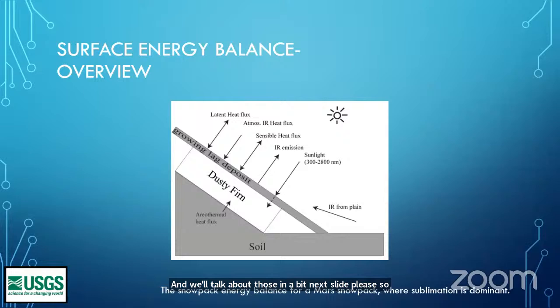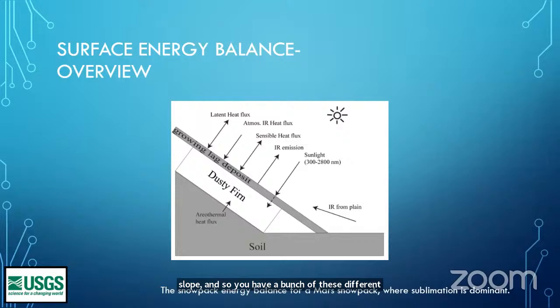What you do is apply the surface energy balance calculation to some setting. This setting here happens to be on Mars on a slope — you have a bunch of these different terms and you track them over time. In this case, we have an additional IR term from a plane that's at the foot of the slope.